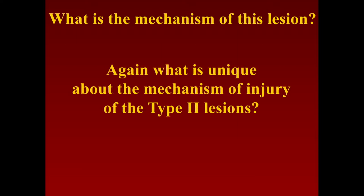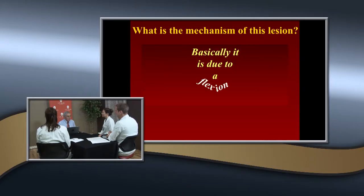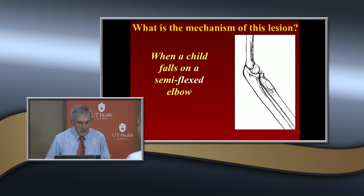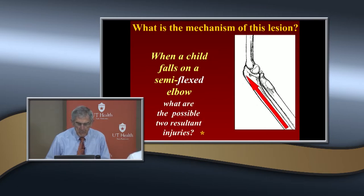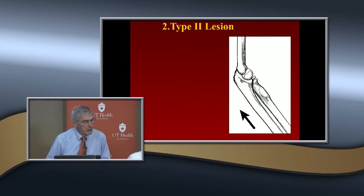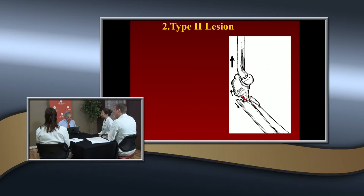The mechanism of this lesion is one of flexion. How are you going to treat it? Mechanism backwards — extension. The child falls on a semi-flexed elbow. If it's a younger child, usually you get a dislocation of the elbow. If they're a little bit older, you get this type 2 lesion. It's more common in the older age group because of the relative weakness, although I've seen it in some younger children.